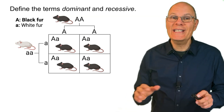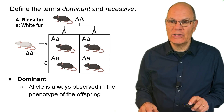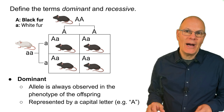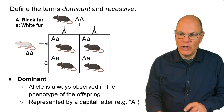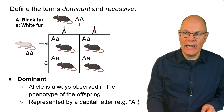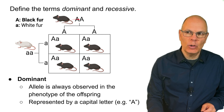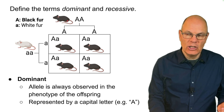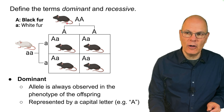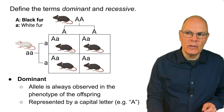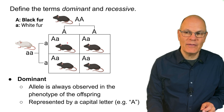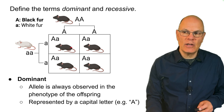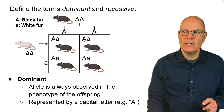Define the terms dominant and recessive. Dominant alleles are always observed in the phenotype of the offspring and are represented by a capital letter — for example, capital A. Here's an individual who is homozygous dominant and expresses the dominant characteristic: dark black fur. In these heterozygotes, there is also a recessive allele, but because the dominant allele is present, the characteristic of the organism is determined by the dominant allele.